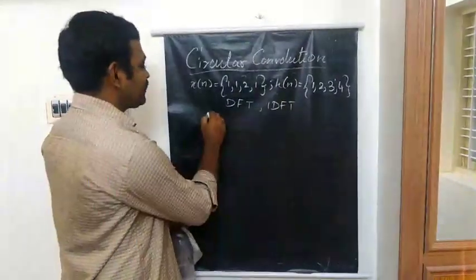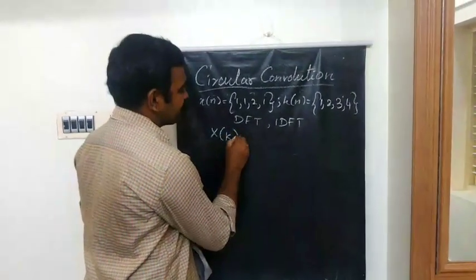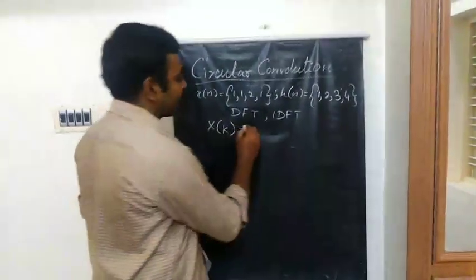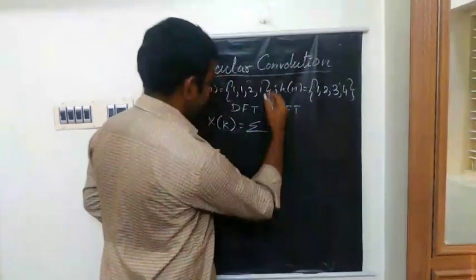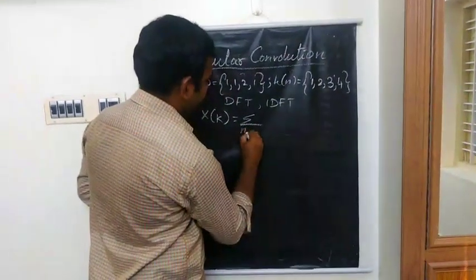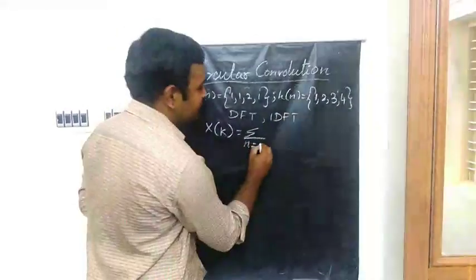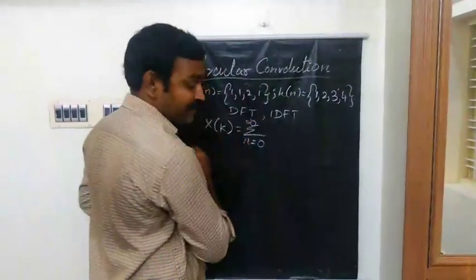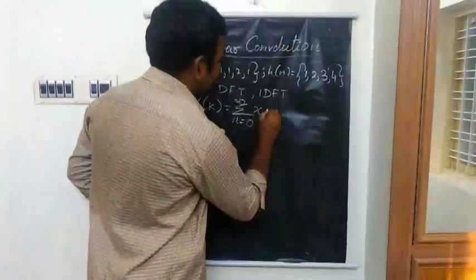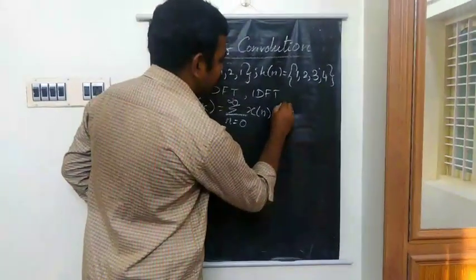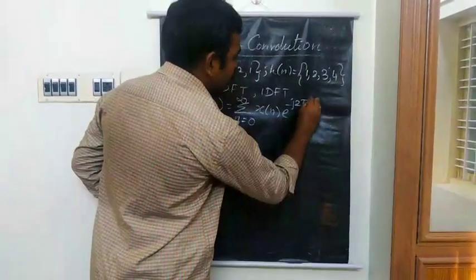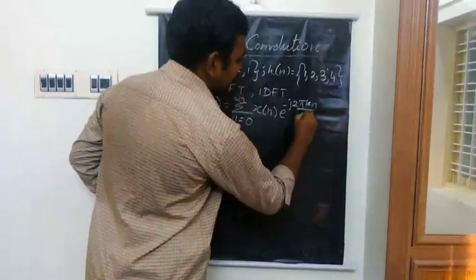So Discrete Fourier Transform, X of k is equal to summation of n varies from 0 to N minus 1, X of n times e power minus j 2π kn by N.